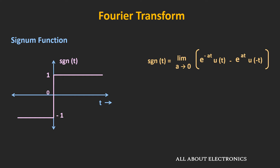So if you see over here, e to the power minus at times u(t) represents one function, while minus of e to the power minus at times u(-t) can be represented by another function. And when a tends to 0, then these two functions can be represented by almost straight lines. So when we represent this signum function as the summation of the two exponentials, then we can find the Fourier transform of this signum function.